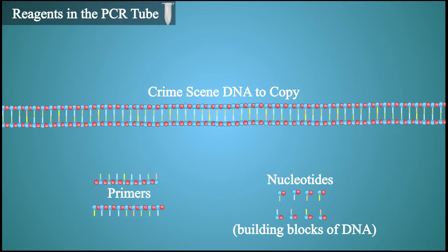Three, primers. These are needed to get the process started. Four, a special form of DNA polymerase that tolerates high temperatures, known as Taq polymerase.